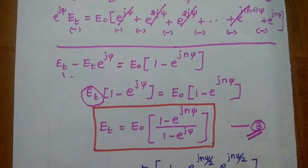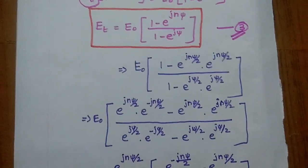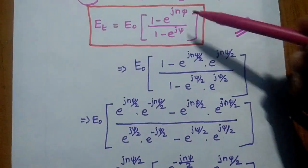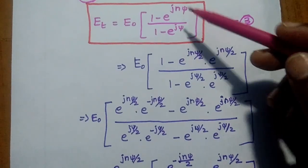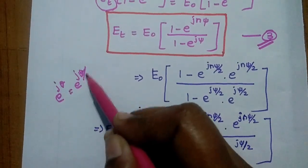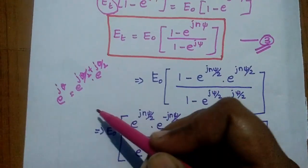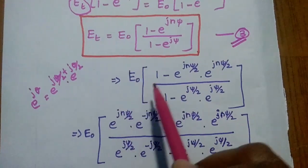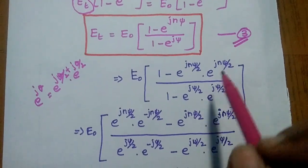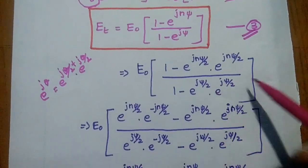We simplify further by rewriting the exponential form. Using the identity e^(jθ) = e^(jθ/2) · e^(jθ/2), we write e^(jNψ) = e^(jNψ/2) · e^(jNψ/2) in the numerator, and e^(jψ) = e^(jψ/2) · e^(jψ/2) in the denominator. The value 1 can be expressed as e^(+jNψ/2) · e^(−jNψ/2), since the exponents cancel to give e^0 = 1.